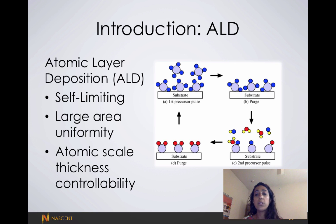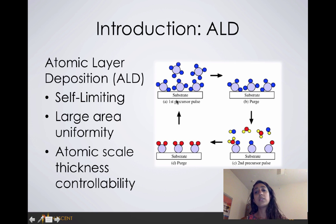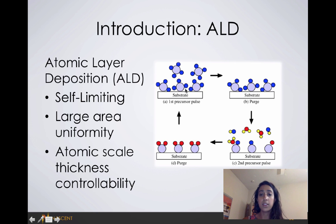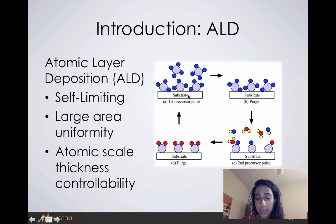Looking at this picture, if this were a titanium nitride growth cycle, we would first expose our surface to the titanium source, which is TD-MAT. The TD-MAT only reacts with the surface at specified sites.